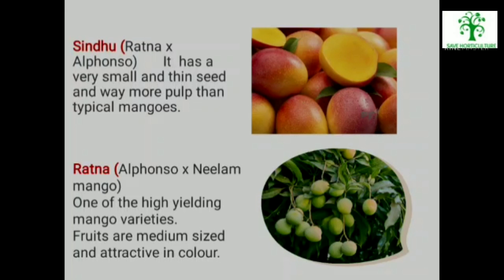Sindhu: Sindhu is a cross between mango varieties Ratnagiri and Alphonso. It was created in 1992 by the agricultural university Konkan Krishi Vidyapeeth, Dapoli, Maharashtra. It has a very small and thin seed and way more pulp than typical mangoes.